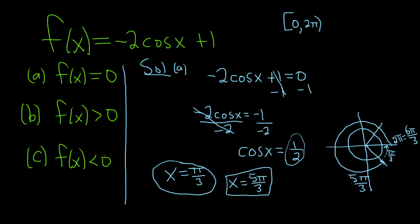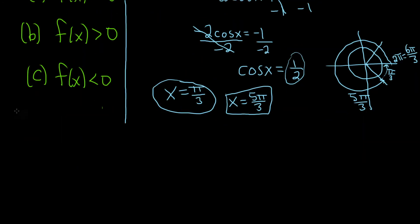Okay, so now we can do the other parts, part b and part c. To do these, I'm going to rewrite our function down here, since I scrolled down and lost it. So, f of x is equal to negative 2 cosine x plus 1.